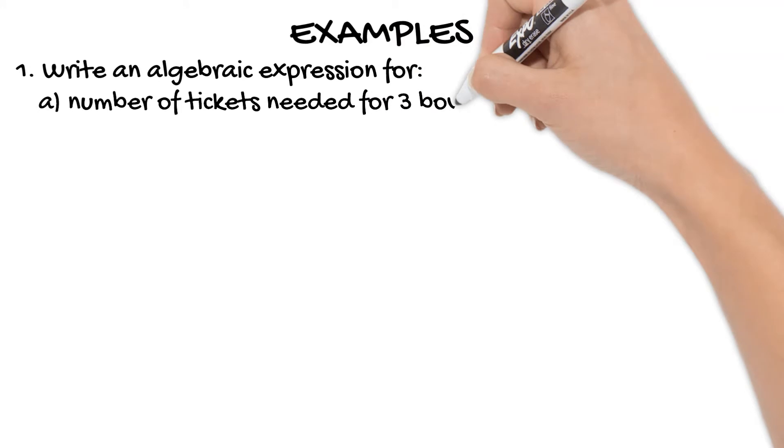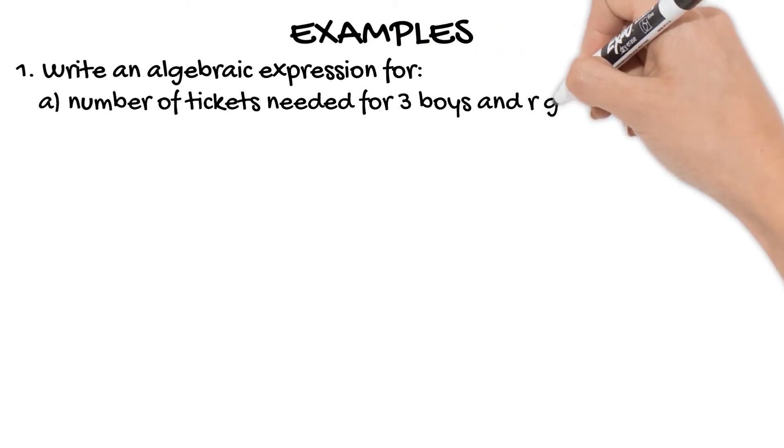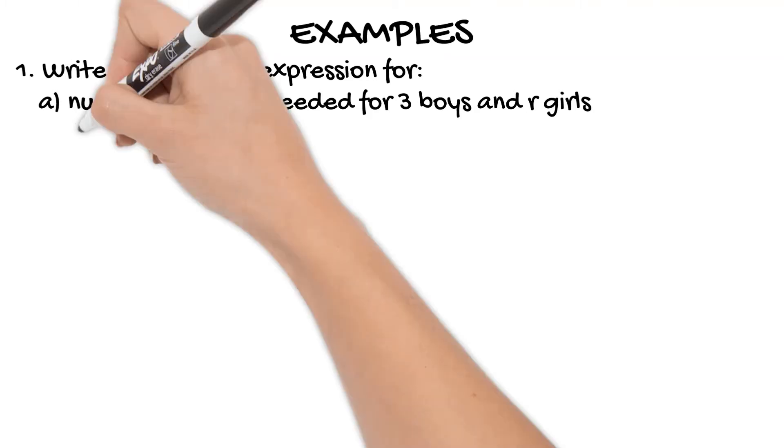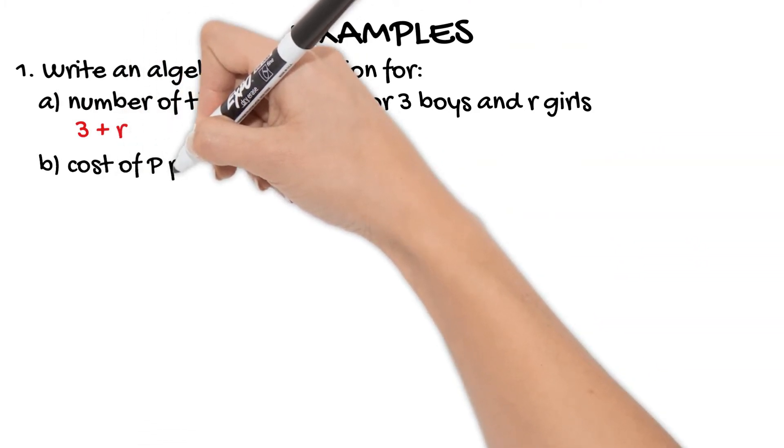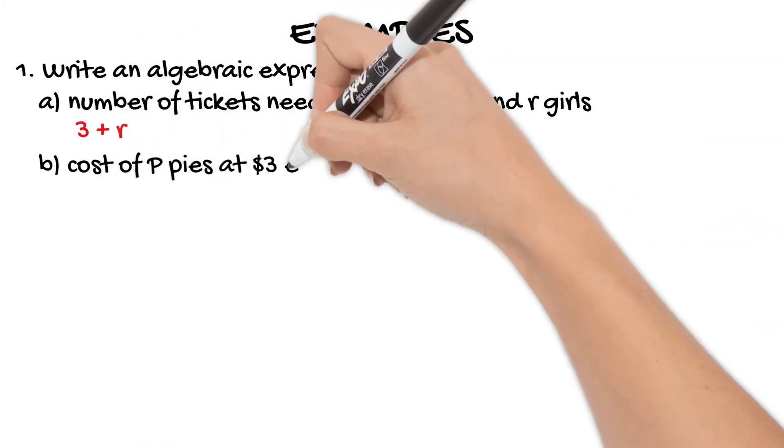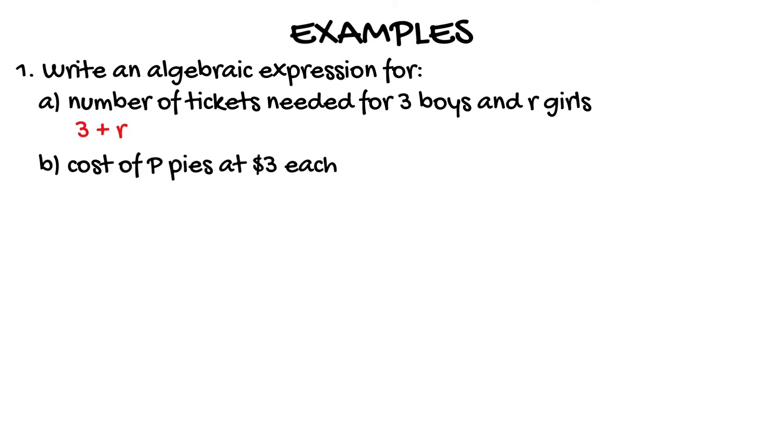Then we have the cost of p pies at three dollars each. So of course you would need to multiply your cost by your number of pies. So that in turn becomes 3 times p, which we would write as 3p. We don't actually write multiplication and division symbols in algebra.